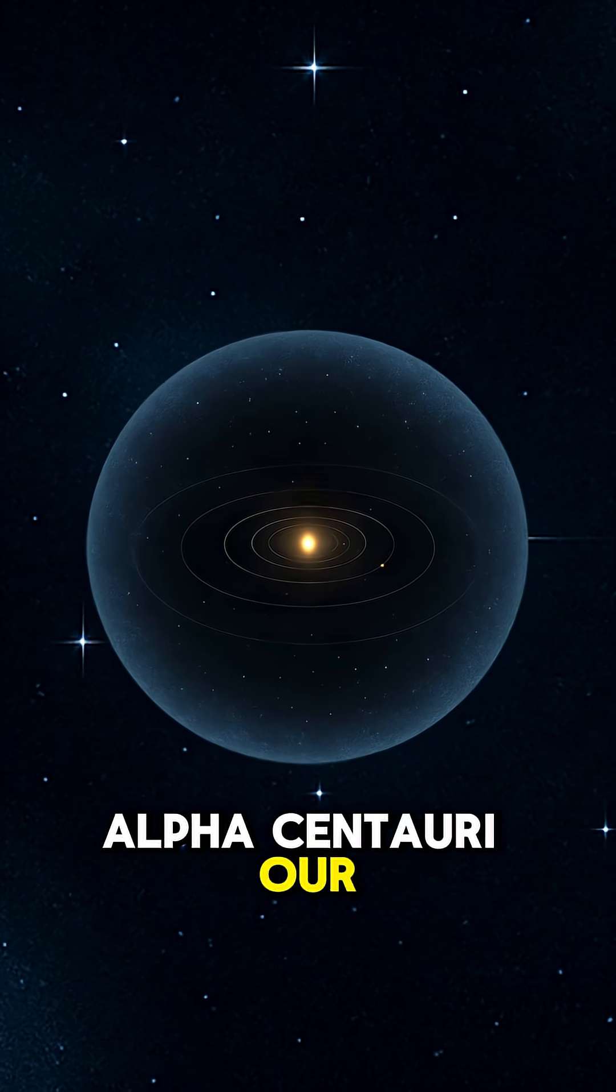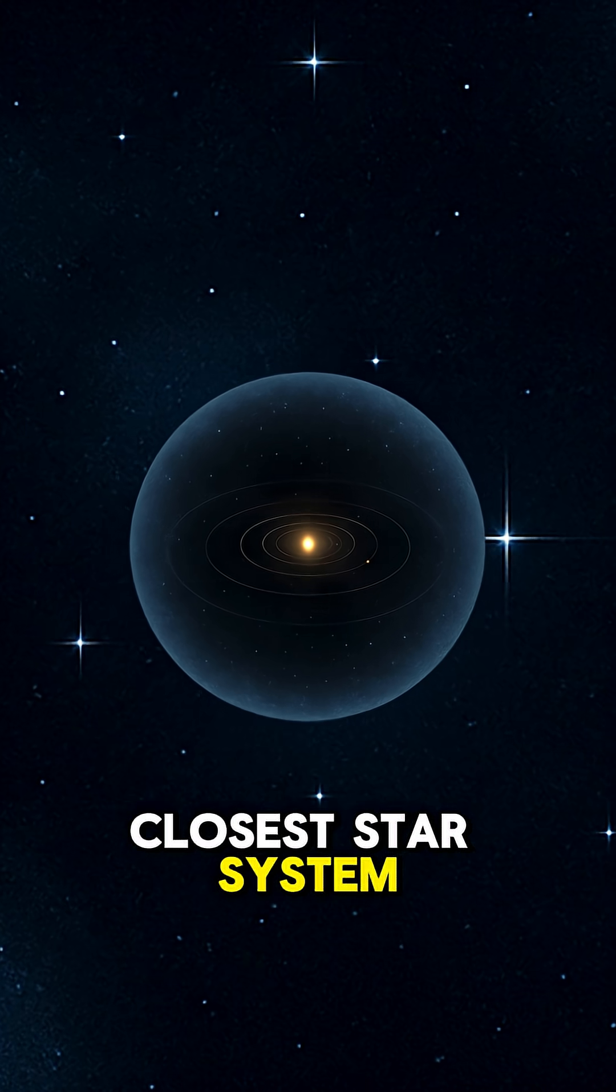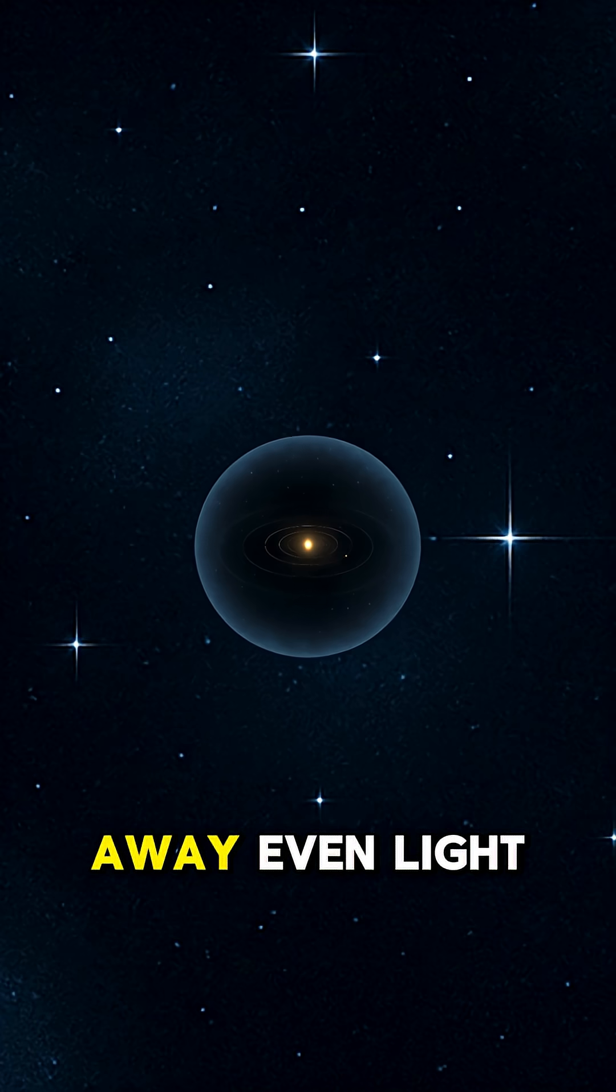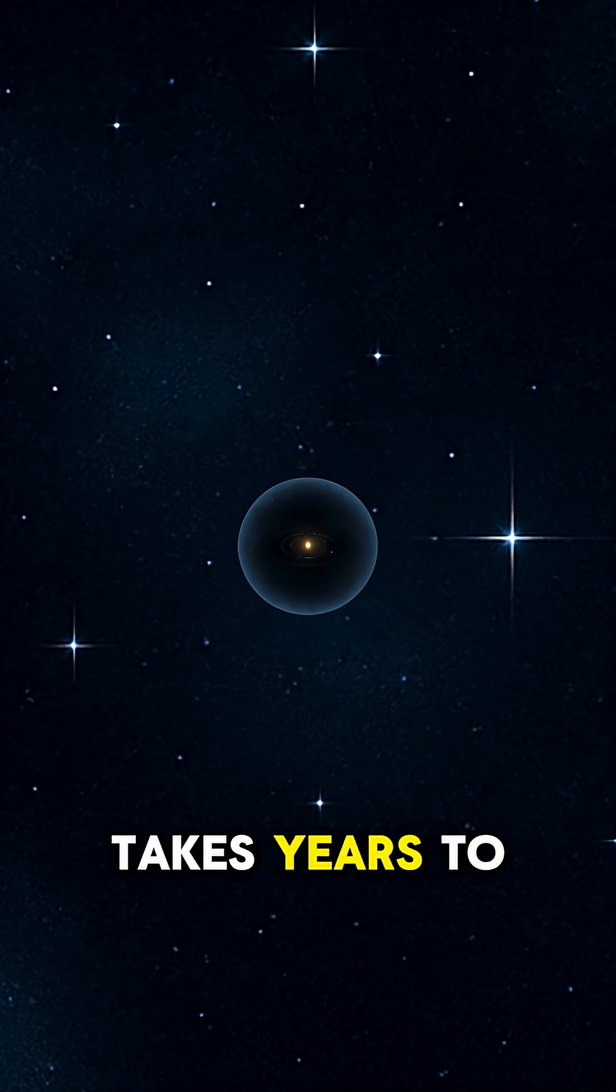Alpha Centauri, our closest star system, 4.37 light years away. Even light takes years to get there.